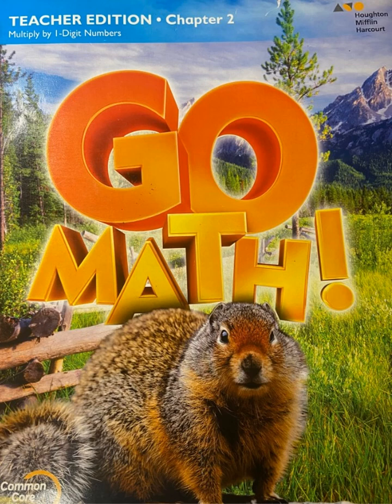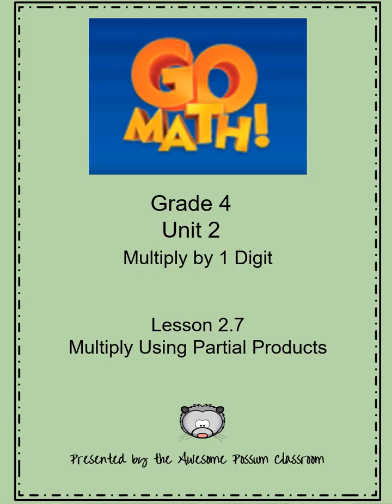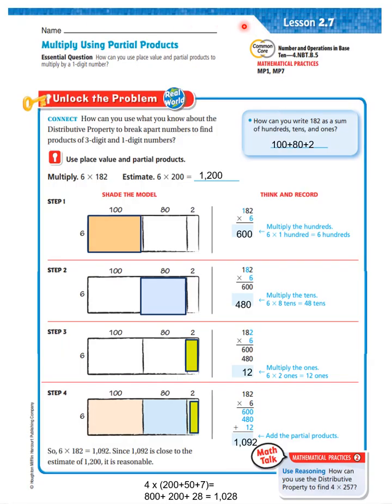Welcome back to grade four Go Math. This is grade four Go Math Unit 2, Multiply by One Digit. This is Lesson 2.7, Multiply Using Partial Products.